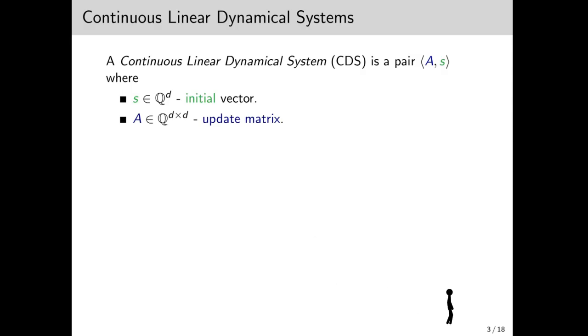Formally, a continuous linear dynamical system (CDS) is given by an initial vector s and a rational update matrix A. The system evolves according to the dynamics x.t equals Axt, with the initial point x0 being s. As it turns out, these dynamics uniquely define the function x.t.